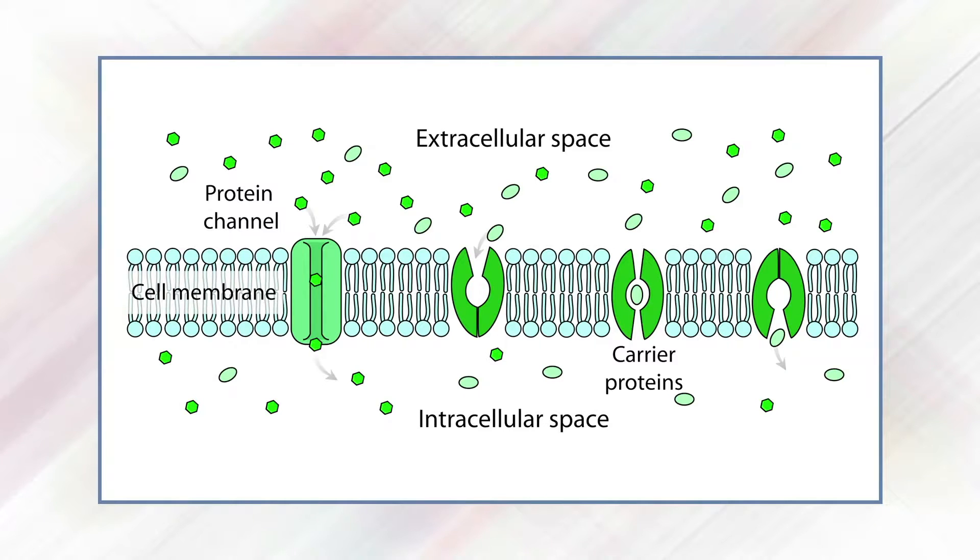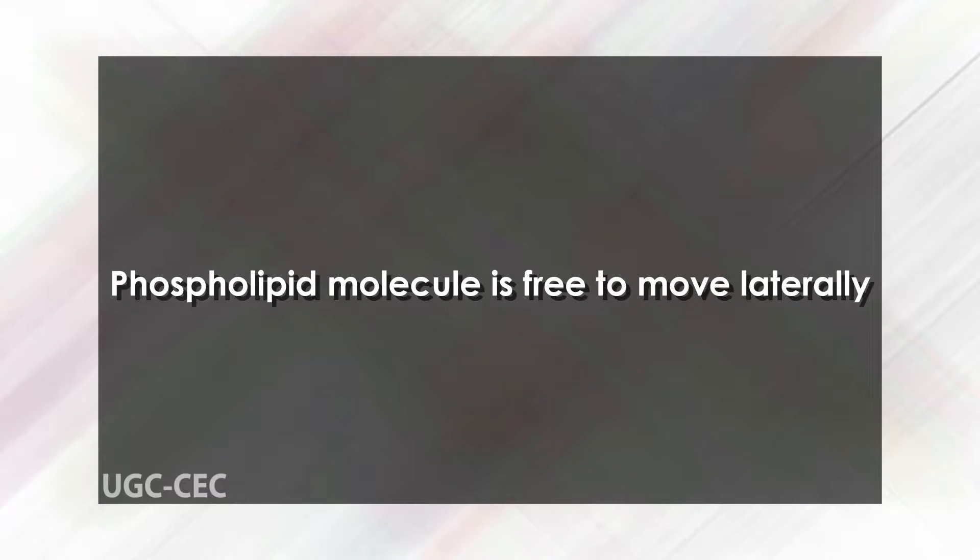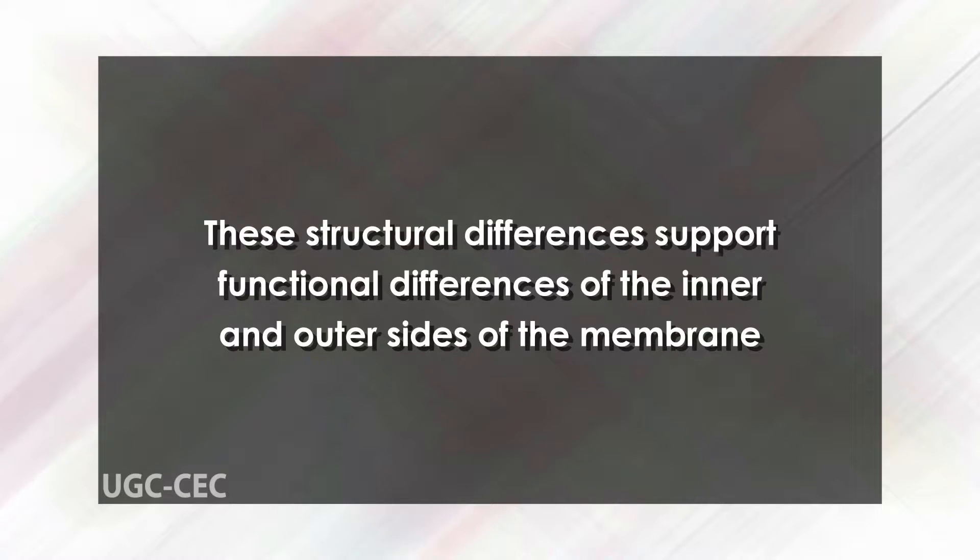One of the most important features of the fluid mosaic model is that the phospholipid bilayer is fluid — phospholipid molecules are free to move laterally. There is very little exchange between the two halves of the bilayer; this minimal flip-flop action allows asymmetric distribution of phospholipids. Membrane surfaces exhibit asymmetry — different characteristics on the two sides — which supports the functional differences of the inner and outer sides of the membrane.